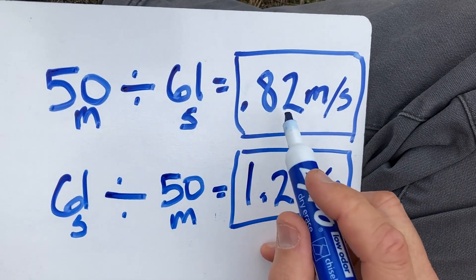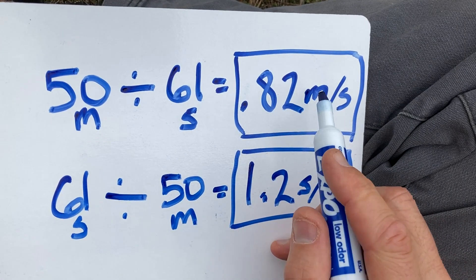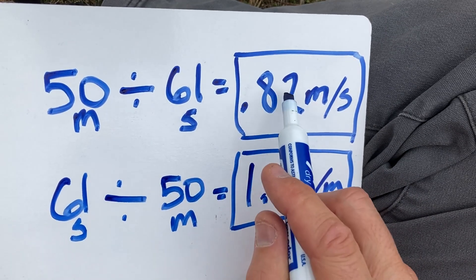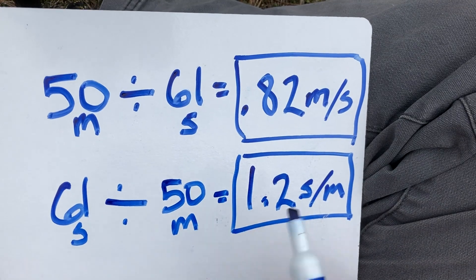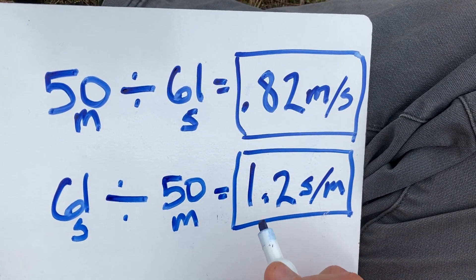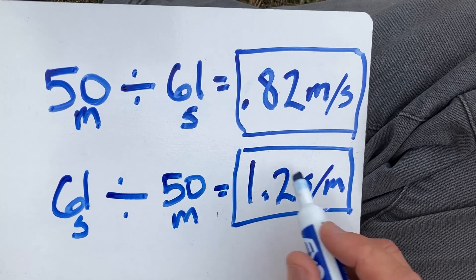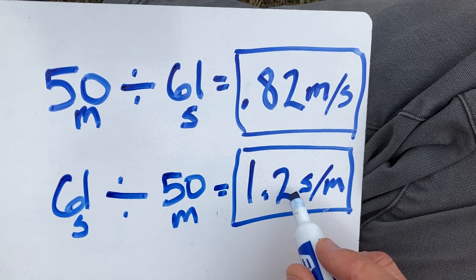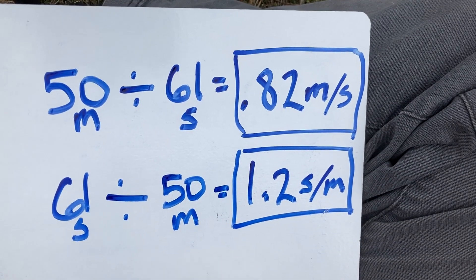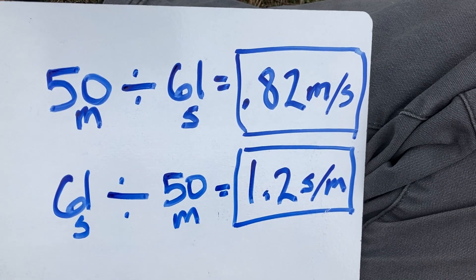One more time: meters per step — if I walk a distance and it takes me 10 steps, I multiply 10 by this number and I know how many meters I've walked. Steps per meter — if I want to walk 20 meters, I multiply 20 by 1.2 and I know how many steps to take. Now let's look at a few places I can put these ideas to work.